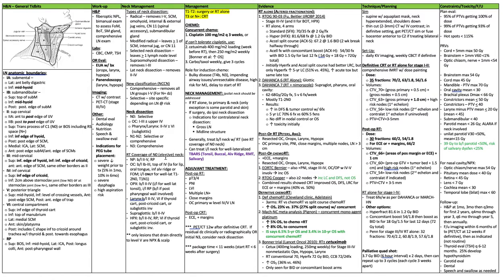You can treat an ipsilateral neck with radiation for well-lateralized tumors, which include tonsil, buccal mucosa, alveolar ridge, retromolar trigone, and salivary gland tumors.